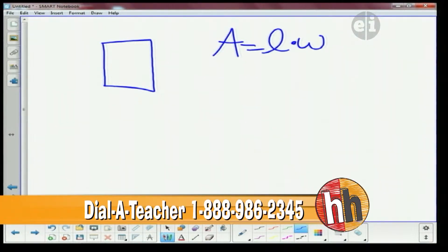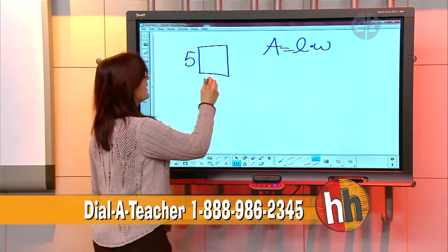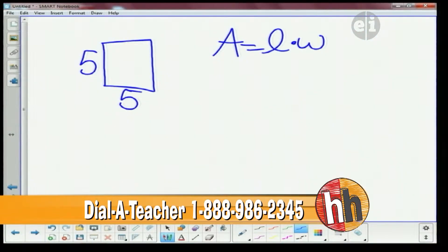If I had a square here and I knew that one side was 5, since it's a square I know all the sides are going to be 5. If my length is 5, then my width is going to be 5, and if I wanted to find the area I would just multiply 5 times 5 and I would get 25.